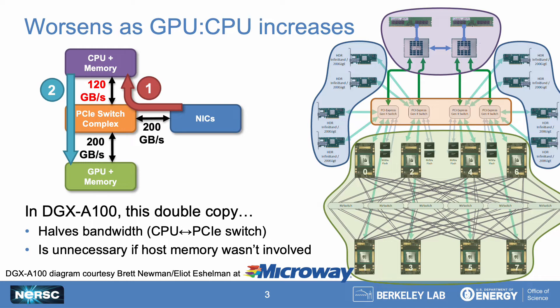On the right here is a diagram of a DGX A100 created by our friends at Microway, and its logical representation is shown on the left. We can see that there's huge bandwidth between PCIe devices like the NICs and GPUs, but by running all storage I/O through the CPU, that NIC-to-GPU bandwidth is reduced by almost half.